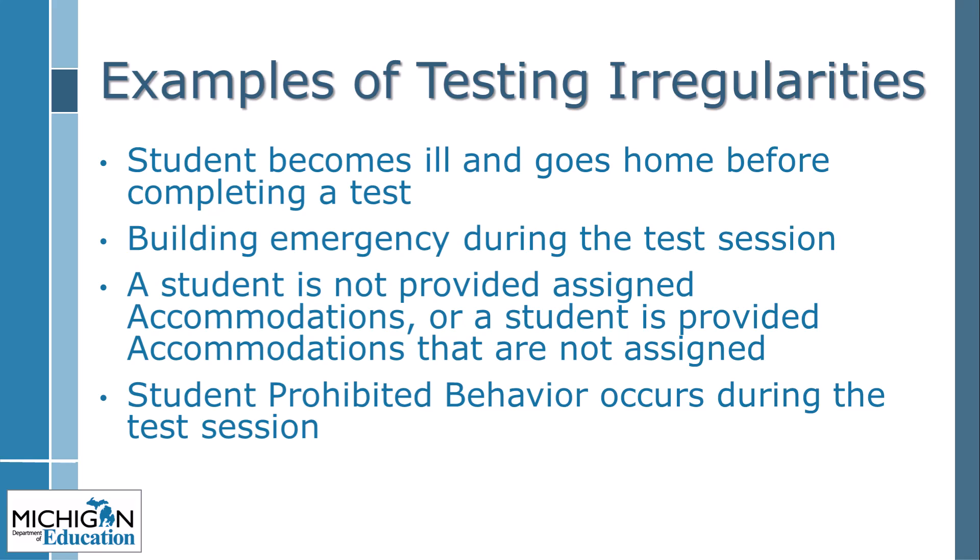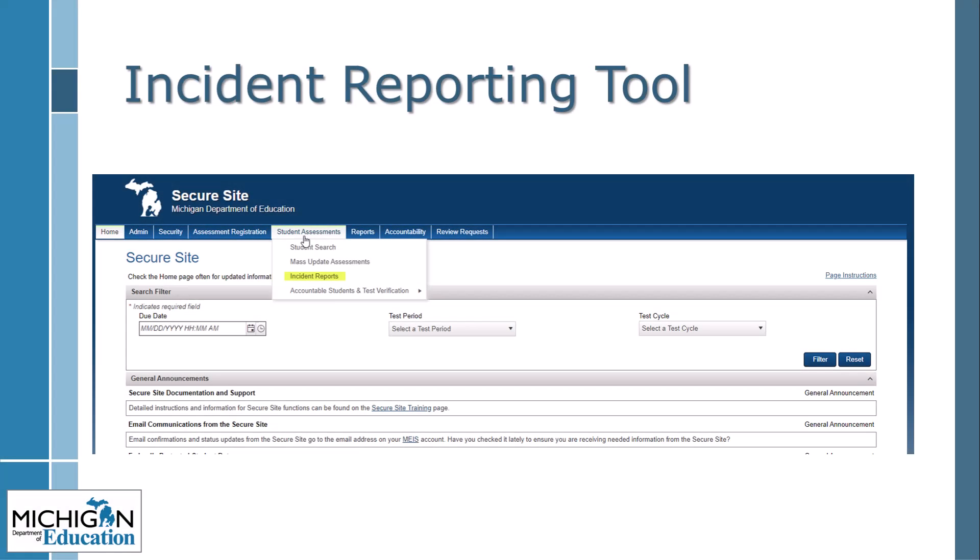Examples of testing irregularities include: a student becoming ill and going home before completing a test, a building emergency during the test session, a student not being provided assigned accommodations or being provided unassigned accommodations, or a student engaging in prohibited behavior. Incident reports are submitted through the secure site by selecting the Student Assessments tab, then Incident Reports in the drop-down menu. After selecting the test cycle and entity information, select the grade, content area, and testing mode. The incident category drop-down will update accordingly — then select the incident subcategory. The incident reporting table in the M-STEP Test Administration Manual provides guidance on which category and subcategory to use.